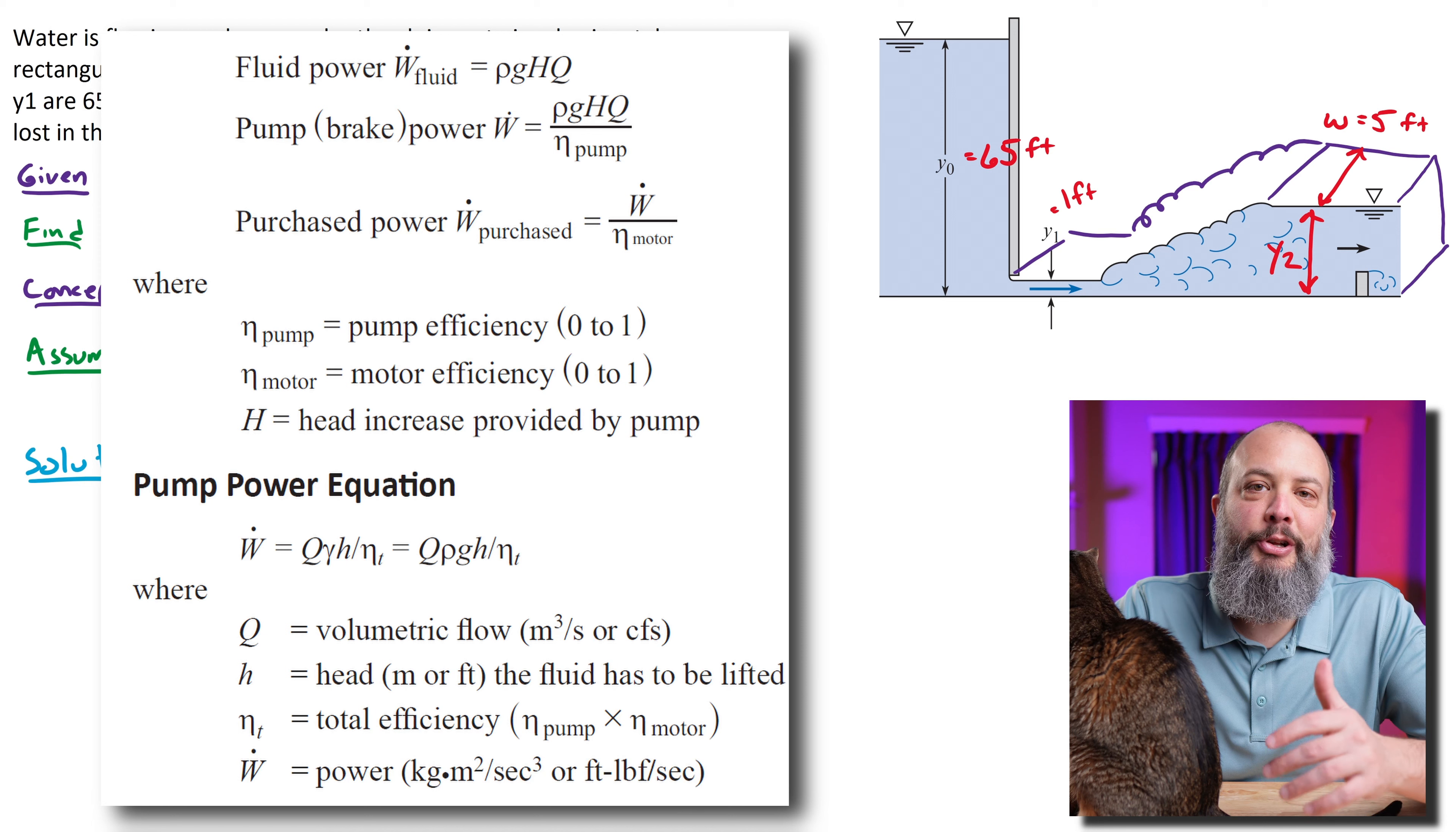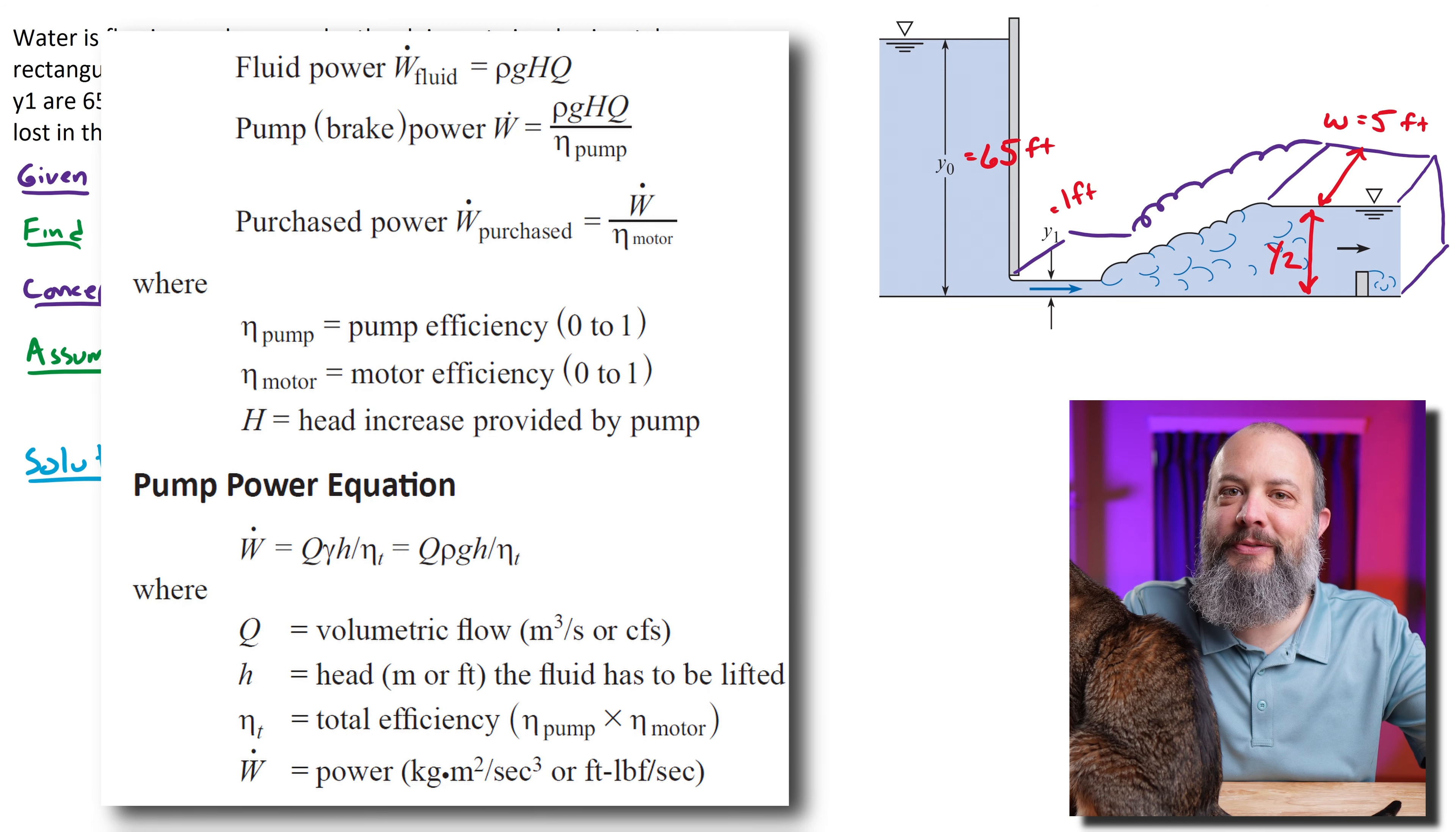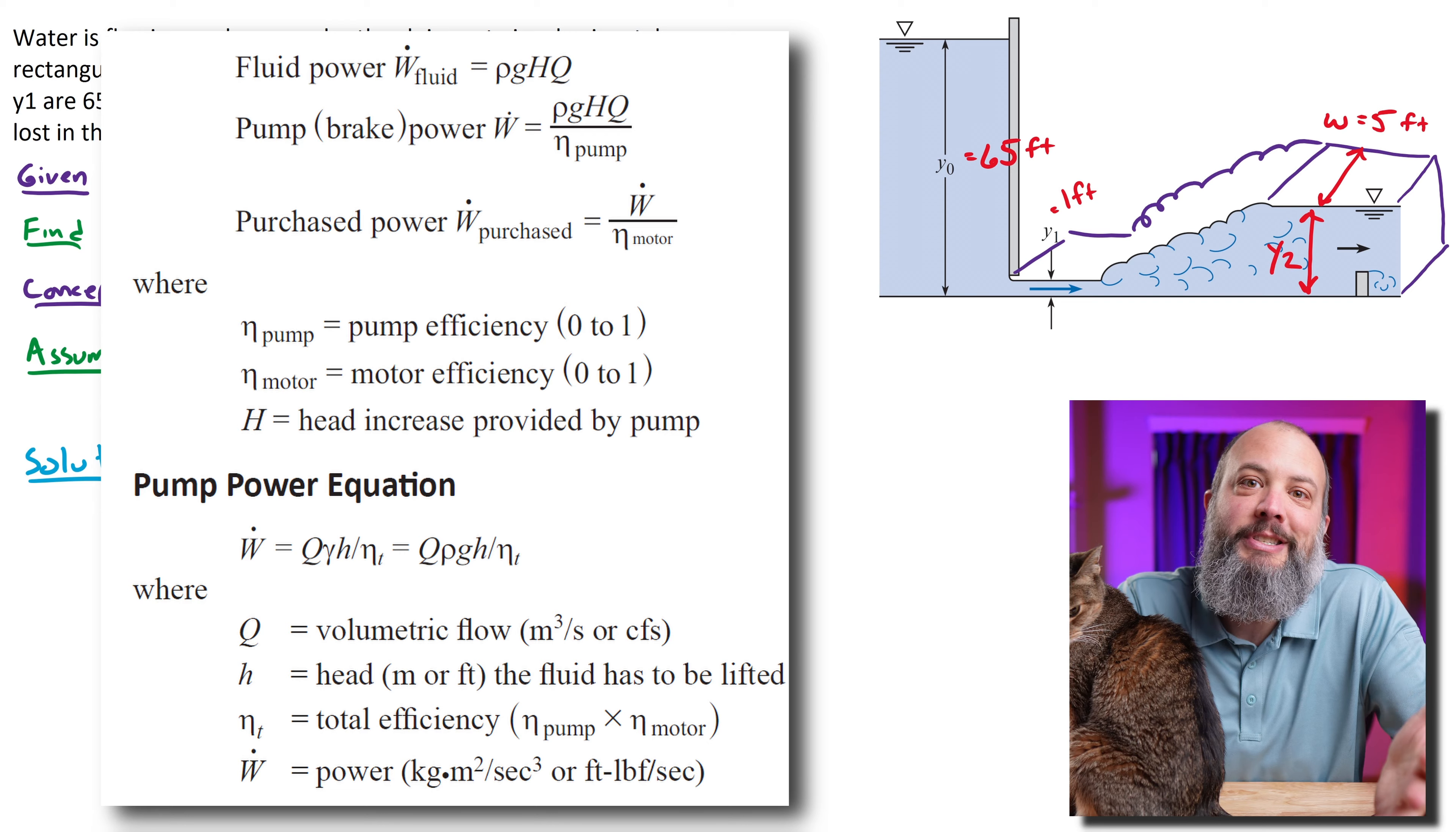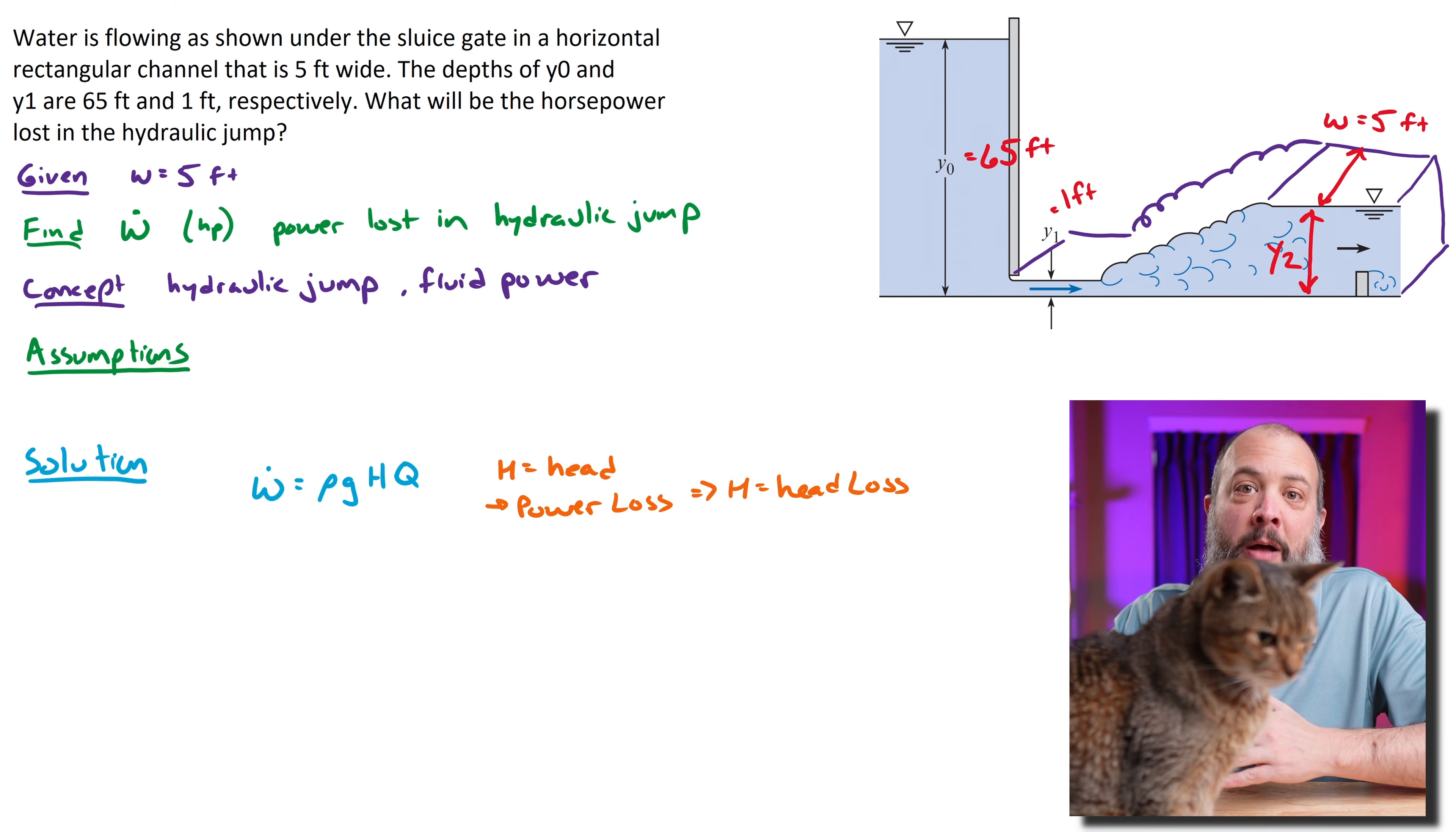I'm going to start the solution to this video by working backwards. I know I ultimately want to find power loss, so let's start with the power equation and find out exactly what intermediate steps I need—that's going to be density, gravity, head, and volumetric flow rate. I left a blank at the top of my page for assumptions, and as I work through the problem every time I make an assumption I write it down here at the top to keep all my assumptions organized.